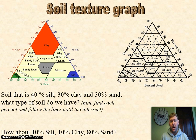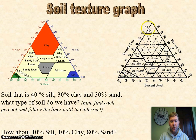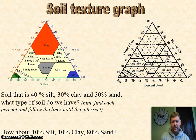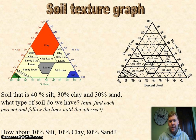Notice the three soils — sand, silt, clay — go from zero to one hundred percent on each side. For example, if you have soil made up of forty percent silt, thirty percent clay, and thirty percent sand, what type of soil do we have? The hint: just find each percent and follow their lines down to where they intersect. That's the type of soil we have.